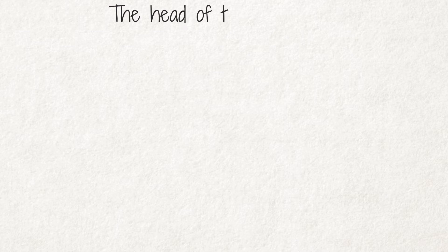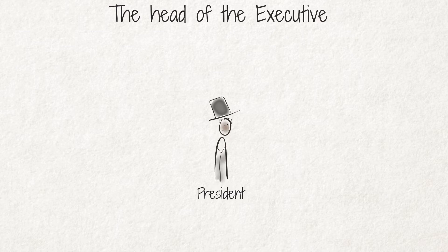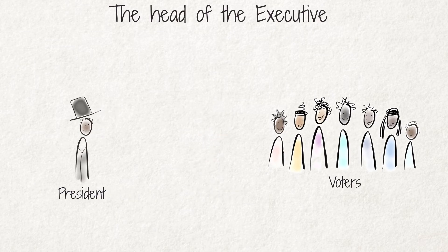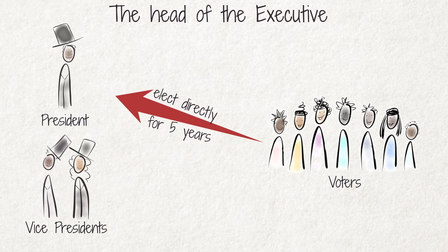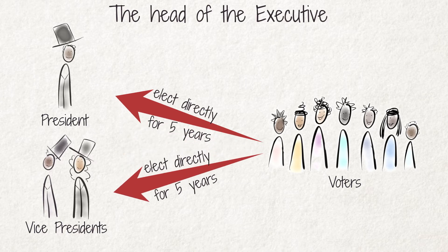The head of the executive is the president, who is directly elected by voters for a fixed term of five years. With effect from 2023, the two vice presidents will stand for election together with the president and will also be directly elected by voters. Until then, the president nominates the vice presidents, designating one as first vice president and the other as second vice president.